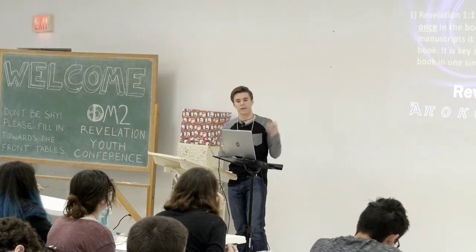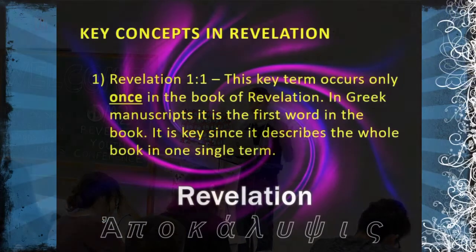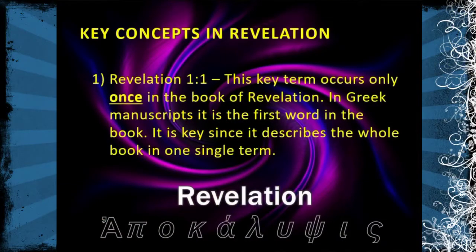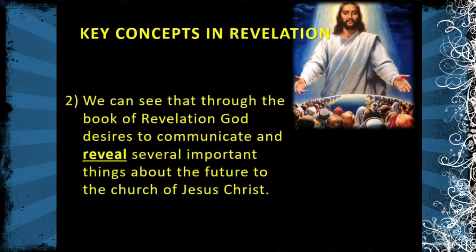This title, the key term, occurs only once in the book of Revelation. In Greek manuscripts, it is the first word in the book. It is key, since it describes the whole book in one single term. Most books in the Bible were given titles afterwards by the Church Fathers, but Revelation has its own title. It starts out with this word — apocalypsis. Through the book of Revelation, God desires to communicate and reveal several important things about the future to the Church of Jesus Christ.